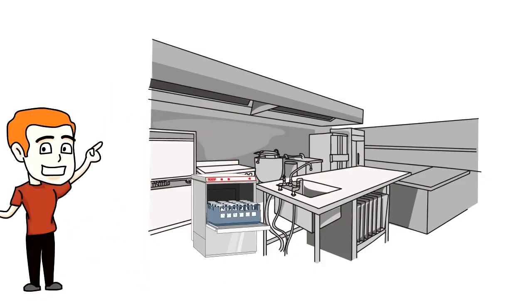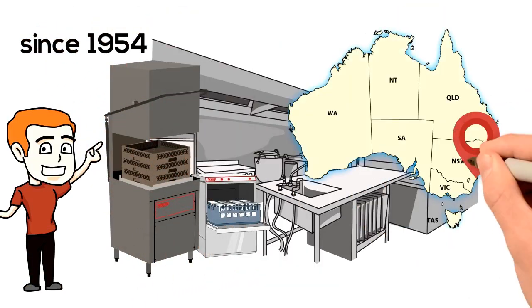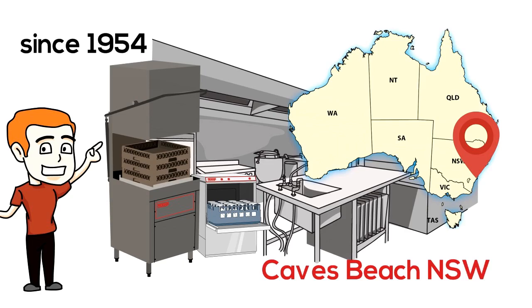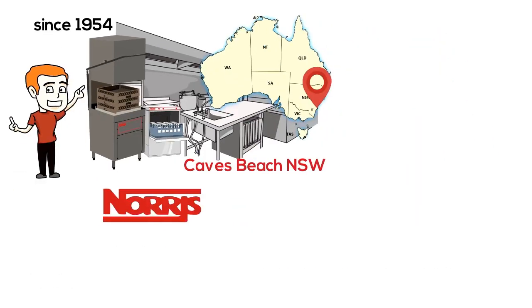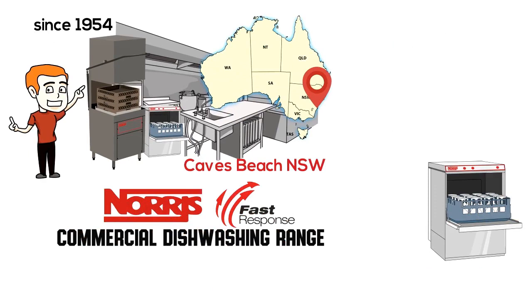To let you know we know our stuff, Norris have been making dish and glass washers in Australia since 1954 and we are located in Caves Beach, New South Wales. Check out the new Norris fast response commercial dishwashing range. There's a machine that's perfect for you. And ask about our extended five year warranty.